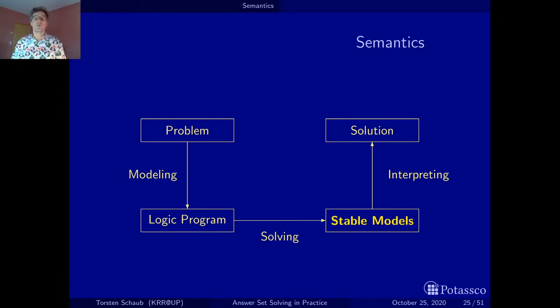Take, for instance, timetabling at university or at school. You write the rules of your timetabling problem, for instance, that you cannot be in two rooms at the same time and so on. Everything is specified in a logic program. You push the button and get an arbitrary number of stable models out. And each stable model is an alternative solution, an alternative timetable for your original problem.